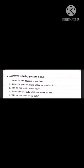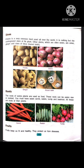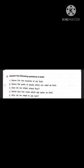Question number 4: Name any two roots which are eaten as food. Children, open page number 61, topic roots. The roots of some plants are used as food. These roots can be eaten raw or cooked. You must have eaten carrot, radish, turnip and beetroot — all these are roots of their plants. You can see pictures of roots: carrot, radish and turnip. So you will write the answer like: two roots that are eaten as food are carrot and radish.